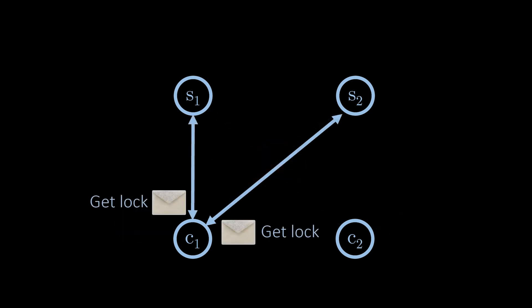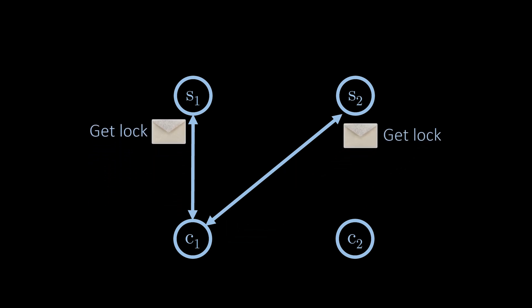Instead of having a centralized component, the nodes could collect locks from the servers to get exclusive access as long as they have the locks. Let's consider a simple two-phase protocol. In the first phase, a client asks for the lock from each server.